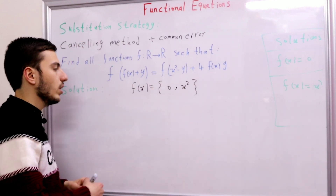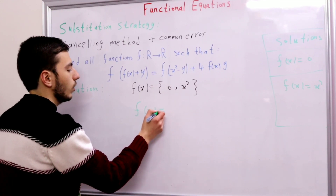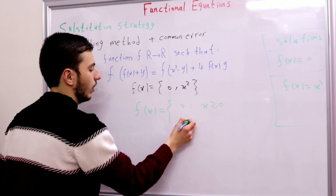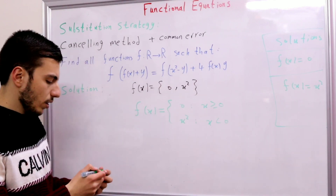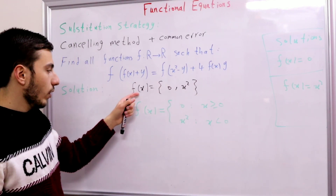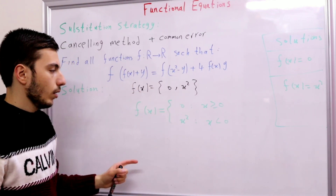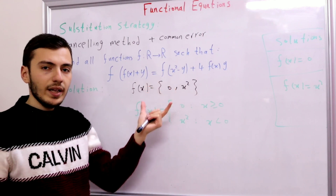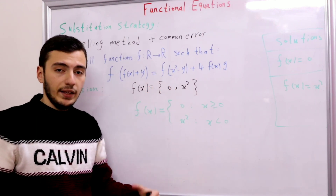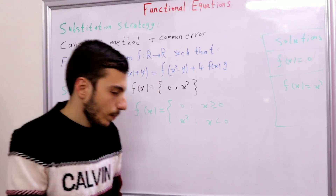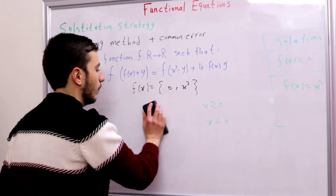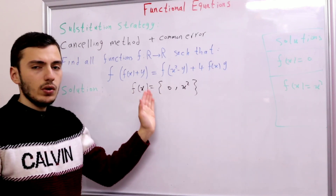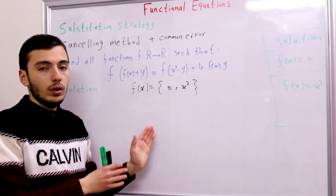Why? Consider the function f(x) = 0 when x is positive and f(x) = x² when x is negative. For this function, f(x) is either 0 or x² at every point, yet it is neither the all-zero function nor the x² function. We need to either prove or disprove that such mixed states are possible — and usually we disprove them. So let's prove the separation of these states.